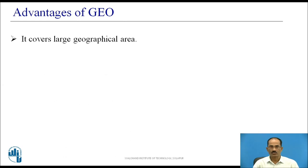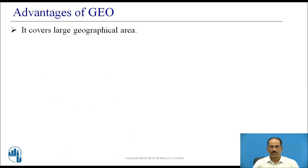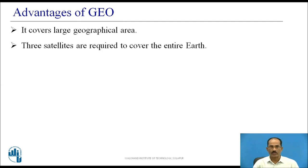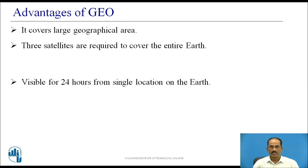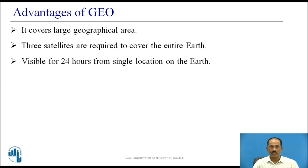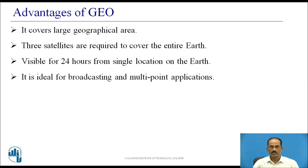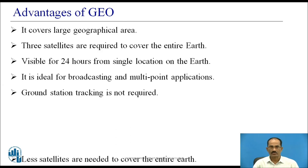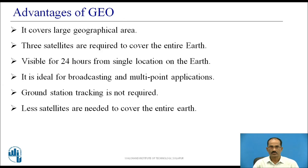Advantages of GEO: As geosatellites are at greater height, they cover a large geographical area. Hence, only three satellites are required to cover the entire earth. Geosatellites are visible for 24 hours continuously from a single fixed location on the earth. They are ideal for broadcasting and multipoint applications. Since these satellites are visible for 24 hours, ground station tracking is not required. Less number of satellites are needed to cover the entire earth.